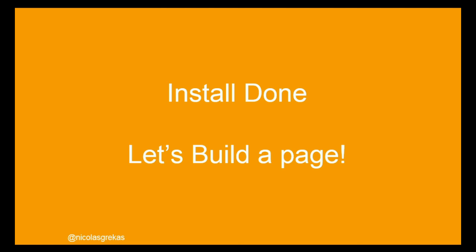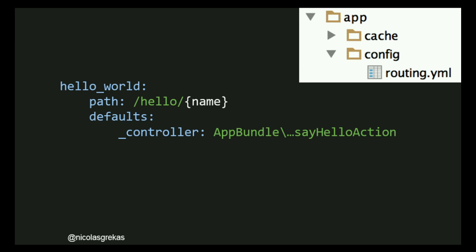Now we've installed Symfony — let's build a page. One of the first things you can do is create a route to the new page you want to add. To do that, you open the routing.yml file — in a Drupal module it's called myModule.routing.yml and the content is the same. The content is YAML. The 'hello_world' is the name of the route. Path is the URL pattern — we have the bracket name placeholder. And in defaults we define the underscore controller and a class name — the fully qualified class name and the method that should be called whenever this route is hit by an HTTP client.